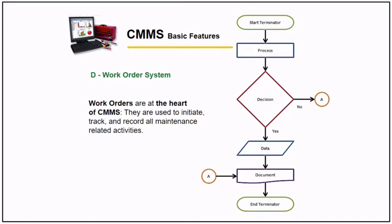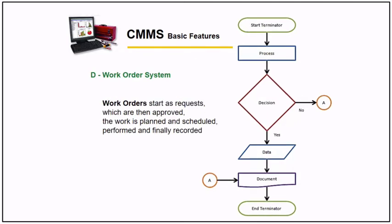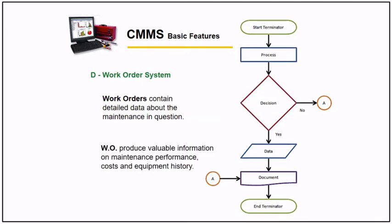For the work order system, this feature is the heart of the CMMS software. They initiate, track, and record everything related to maintenance activities. The work order starts as a request for work — scheduling the work, performing the work, and finally recording the work done. All work orders contain all data about the work that become part of the history of the equipment, which will later be useful in planning and analysis.